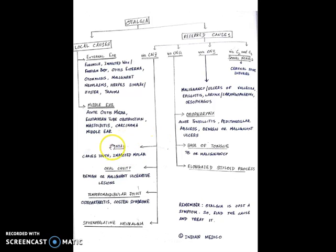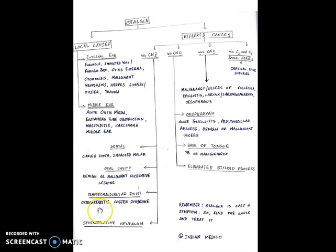The causes of otalgia due to conduction via the fifth cranial nerve include dental pathology, for example a carious tooth or an impacted molar. It can also be due to a pathology in the oral cavity, such as a benign or malignant ulcerative lesion. Additionally, a pathology in the temporomandibular joint, such as osteoarthritis or Costen's syndrome, and sphenopalatine neuralgia can also cause otalgia via the fifth cranial nerve.